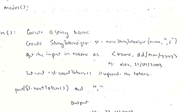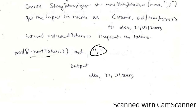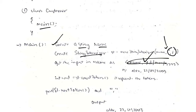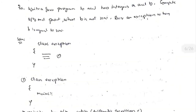For example, if the input is 'alex,22/01/2003', using delimiter characters comma and slash, it will be separated into: alex, 22, 01, and 2003. Using st.countTokens(), each one is a token, so we get the number of tokens and print each token with a comma. In the main function we create a string name, take the date of birth, create the StringTokenizer, assign the delimiter, count tokens with a for loop, and print each token.